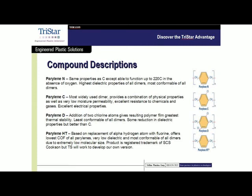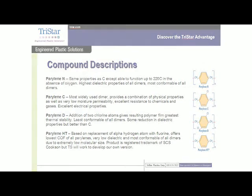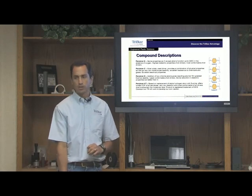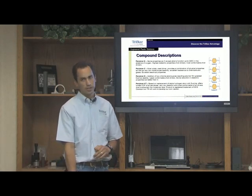They further added another chlorine to the perylene and we got perylene D. It's not normally used — it's very rare that somebody would actually ask for perylene D. Most people ask for perylene N and C. The fourth variety is perylene HT, which is a fully fluorinated perylene compound — they swap out the hydrocarbon with fluorocarbon. It's very expensive and difficult to adhere to any surfaces, so it's really used in very specific applications where a fully fluorinated version is needed.